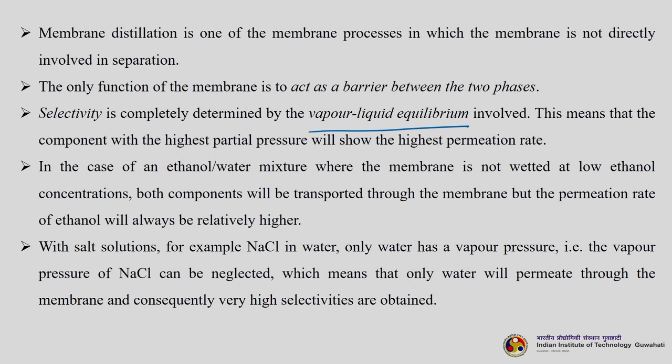Take the example of an ethanol-water mixture: where the membrane is not wetted at low ethanol concentrations, both ethanol and water will be transported through the membrane. However, the permeation rate of ethanol will always be relatively higher because of its higher partial pressure. For a salt solution where sodium chloride is dissolved in water, only water has a vapor pressure; the vapor pressure of sodium chloride can be neglected, which means only water will permeate, and consequently very high selectivities are obtained.